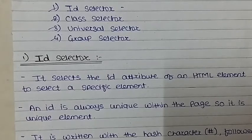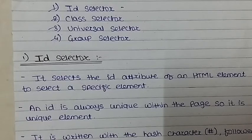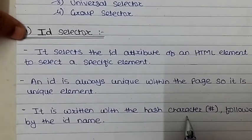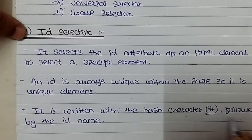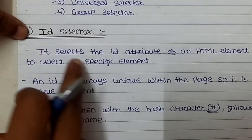ID is always unique within the page — it is a unique element. If the same name is repeated three or four times, we cannot call it an ID. ID is unique throughout the document, meaning no duplication is allowed. The ID selector is written with the hash character followed by the ID name.